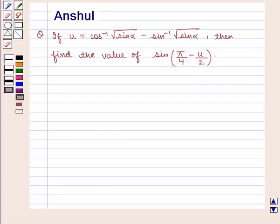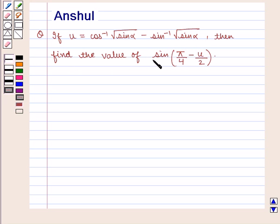Hello and welcome to the session. In this session we are going to discuss the following question: if u is equal to cos inverse of square root of sin alpha minus sin inverse of square root of sin alpha, then find the value of sin of pi by 4 minus u by 2.